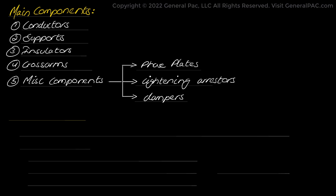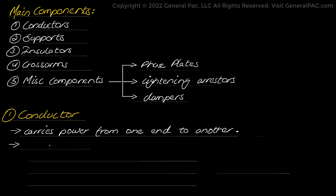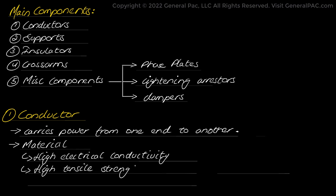The first and most important component of an overhead transmission line is the conductor, which is required to transport electric power from one end to another. Proper selection of conductor material is crucial as most of the cost is based on the conductors. The conductor material should have high electrical conductivity, high tensile strength to bear mechanical and electrical stress, low center of gravity so it does not exert much force per unit volume on itself, and it should be economical.